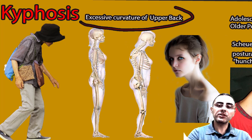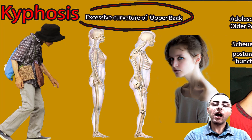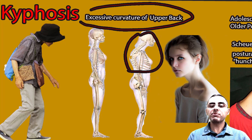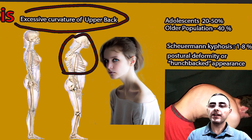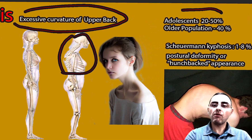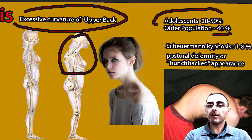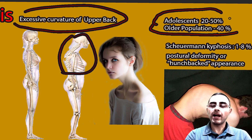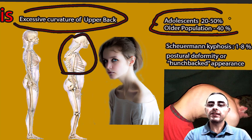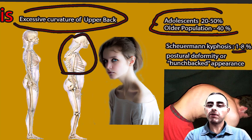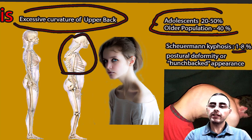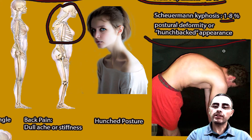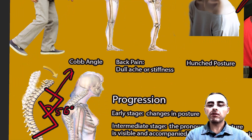Kyphosis is excessive curvature of the upper back — if a person has a hunched posture, it's kyphosis. It's a very common condition, affecting around 50% of adolescents and around 40% of the older population. Most are mild forms, but severe kyphosis — Scheuermann's kyphosis — affects around 1 to 8% of the world population and has a hunched back appearance, as you can see in the picture.